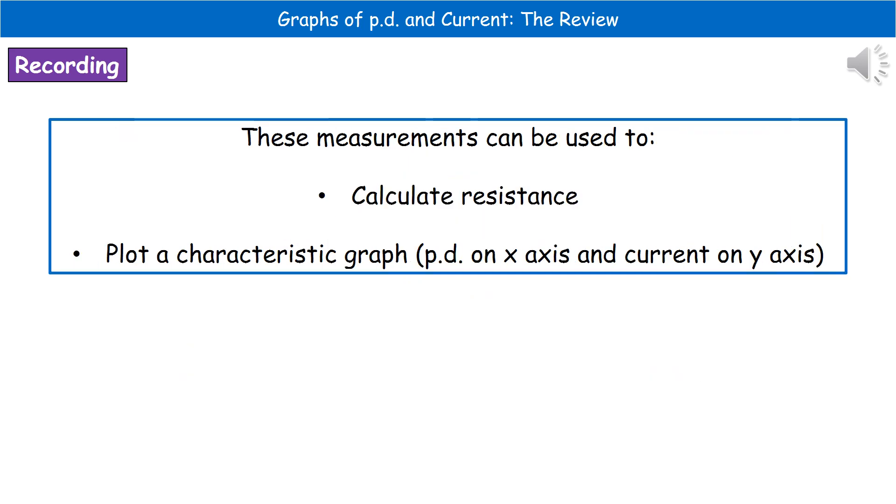Once you've got those readings of current at different potential differences, you can do two things. First, you can use them to calculate the resistance at any given potential difference. Secondly, you can plot that characteristic graph. If you're asked to plot a characteristic graph, make sure that potential difference goes on the x-axis and current on your y-axis. Make sure you've got a proper scale and that the axes are labeled with the units as well as the headings.